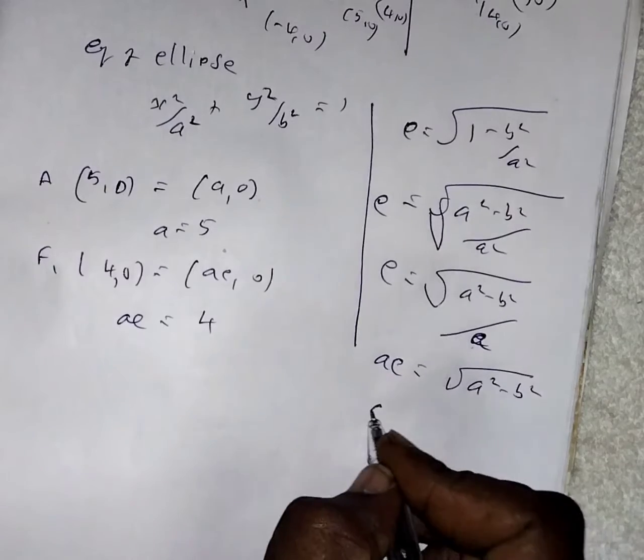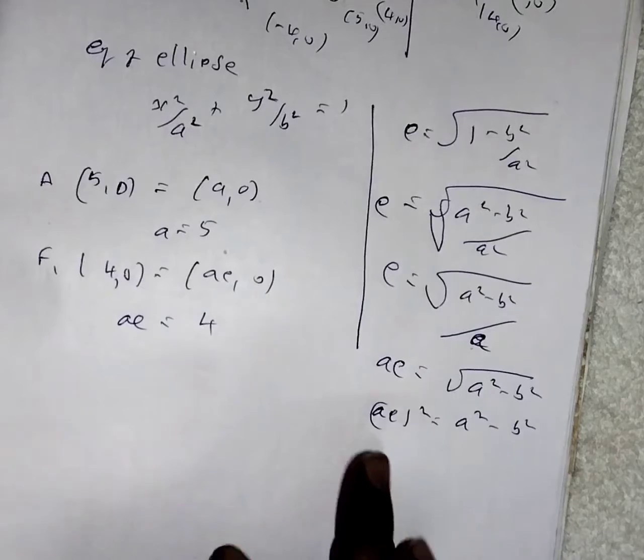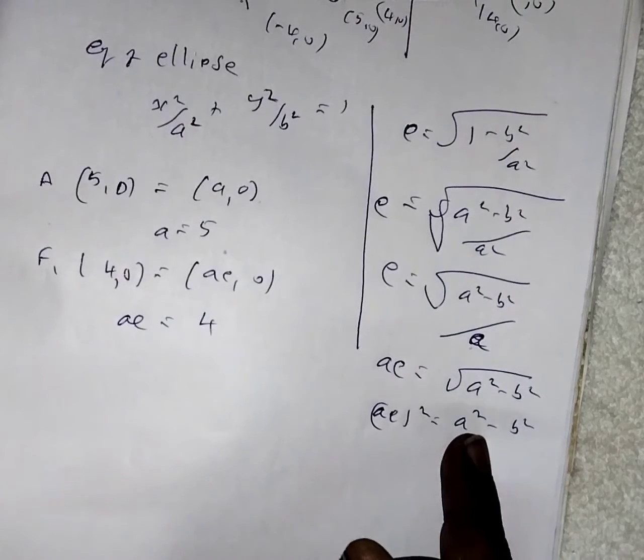Now take square on both sides: AE squared equals A squared minus B squared. With the help of that, we're able to find the B value.